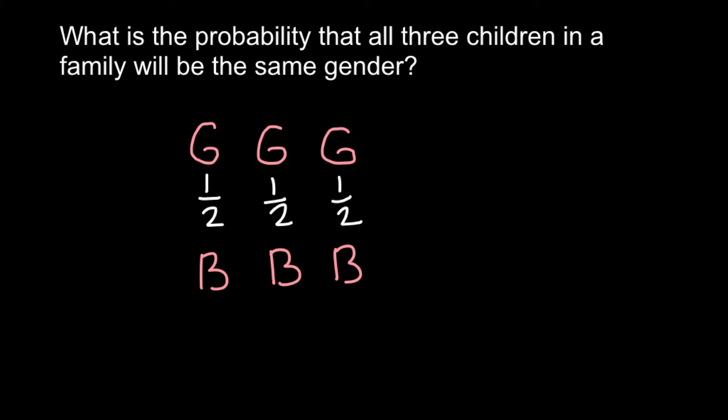In reality, for every 49 girls, 51 boys are born. But in order to simplify this problem, we assume that the frequency of boys and girls are the same. So chances are the same, one half.